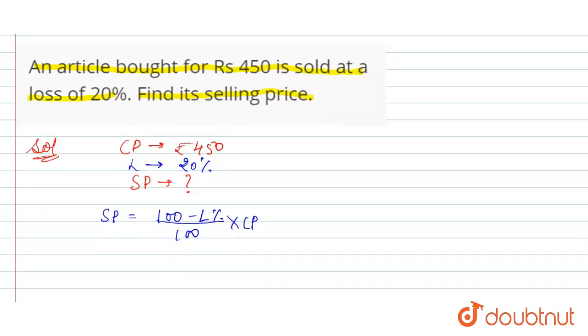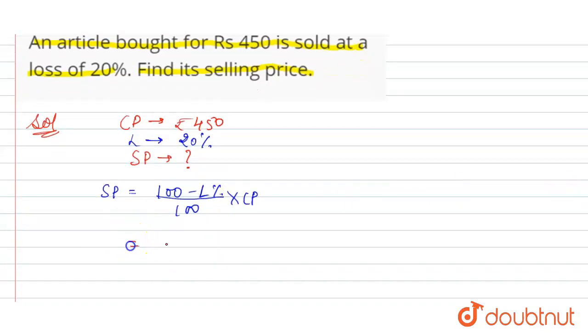Now put the values, that is 100 minus 20 divided by 100 into CP is rupees 450.